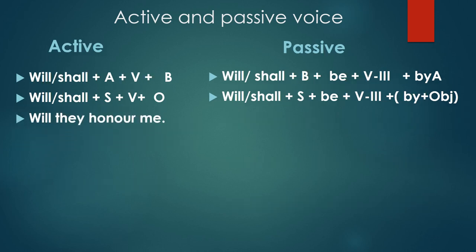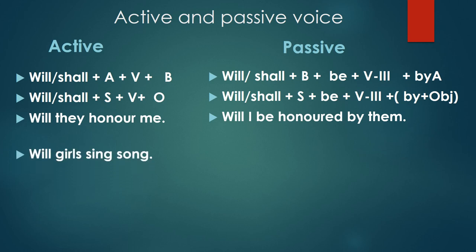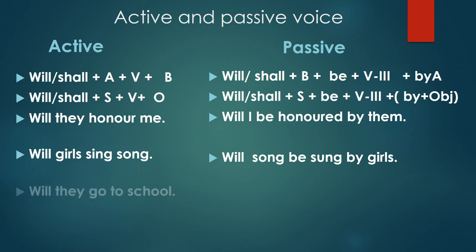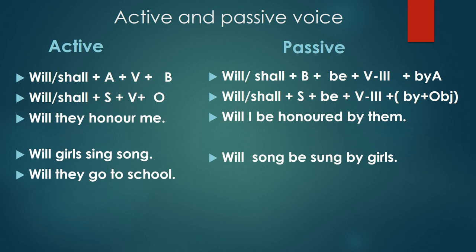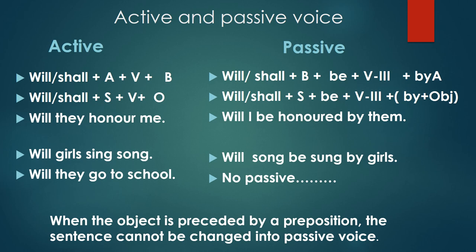'Will they honor me?' — Kya we mera samman karengi? Passive: 'Will I be honored by them?' — Kya main unke dwarah sammanit kiya jayegah? 'Will girls sing song?' — Kya larkiyan gana gahengi? Passive: 'Will songs be sung by girls?' — Kya gana larkiyon ke dwarah gaya jayegah? 'Will they go to school?' — No passive voice. When the object is preceded by a preposition, the sentence cannot be changed into passive voice. 'School' is preceded by 'to', so no passive voice.